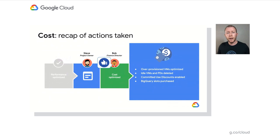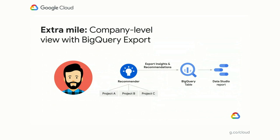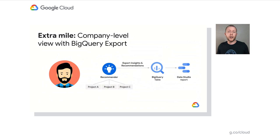And as they wrap up, Bob asks Steve if he can help apply similar techniques to other projects in their organization. Steve goes back to his desk and quickly discovers there is a BigQuery export feature, which allows him to dump all these insights and recommendations to a BigQuery table and do custom analysis across their entire organization. Steve is already familiar with BigQuery, since they have been using it for a lot of their operational data anyway. So a few hours later, he sends Bob a link to a dashboard in Google Cloud's Data Studio that uncovers substantial cost savings opportunities across multiple projects in their organization.